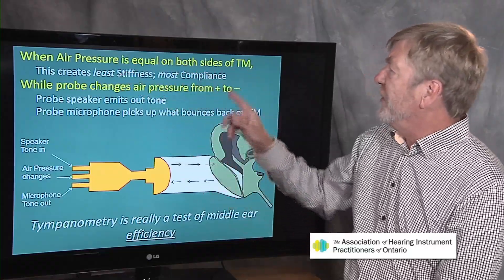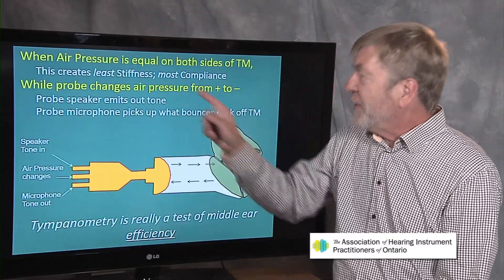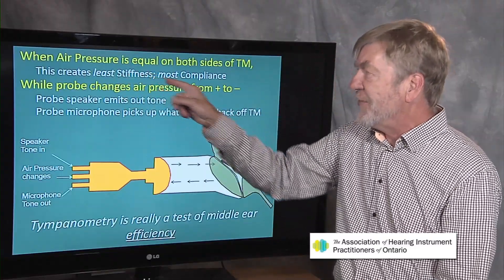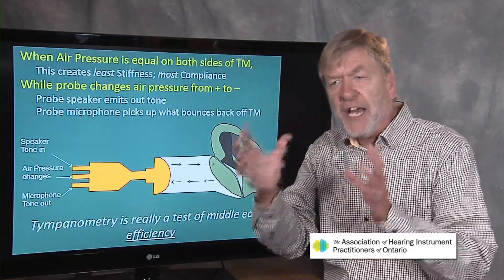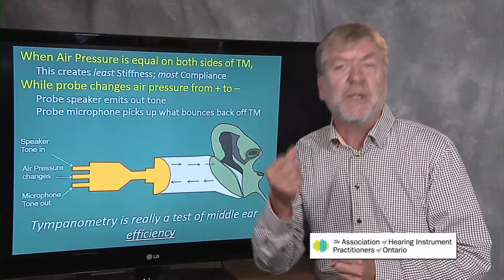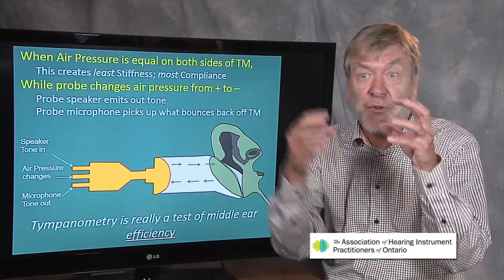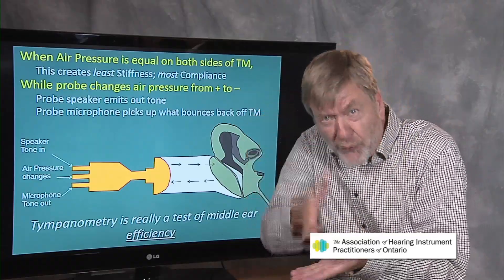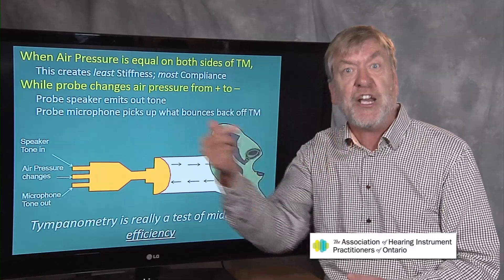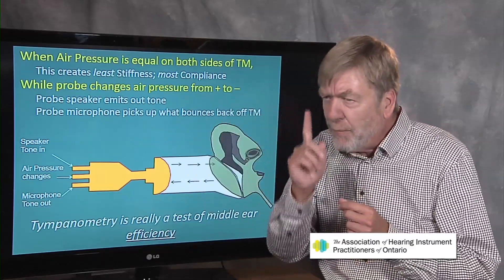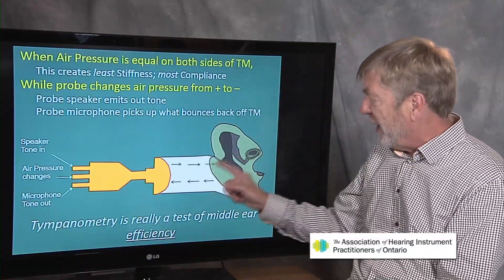When air pressure is equal on both sides of the tympanic membrane, that creates the least stiffness of the middle ear and the most compliance. In plain English, when air pressure is even-steven between the outer ear canal and the middle ear space — when the air pressure is even on both sides of the eardrum — the middle ear is most efficient at passing sound through. It's all about air pressure being equal on both sides of the drum.